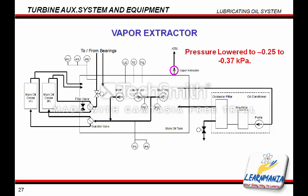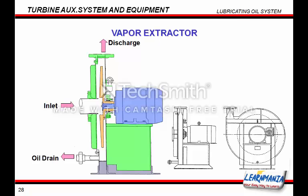The vapour extractor reduces the oil tank pressure from minus 1 to minus 1.5 inches H2O using the valve attached to the suction piping. If the vapour extractor fails, the pressure inside the main oil tank will increase and vapour will leak from the turbine bearings, creating a fire hazard. Thus, Toshiba recommends suspending turbine operation in the event of a vapour extractor failure. The air inlet is located centrally and air discharges from the upper part. Oil collected inside the fan is discharged to the oil tank via the oil drain piping located on the lower section.